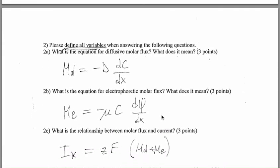Let's now move to question 2, problem 2. You have to define all variables when answering the following question. So, first of all, what is the equation for diffusive molar flux and what does it mean? So, the molar flux is current that basically depends on the diffusion coefficient and the concentration between two points in space and basically the derivative between this concentration between two points.